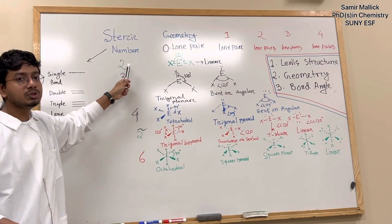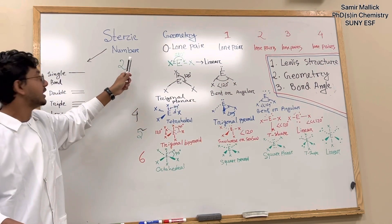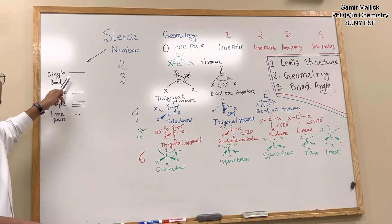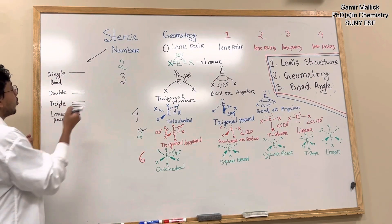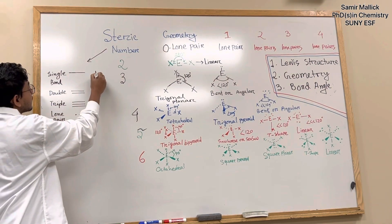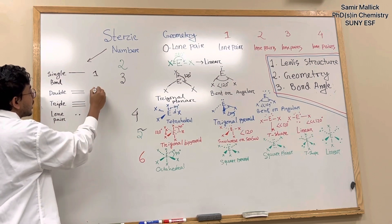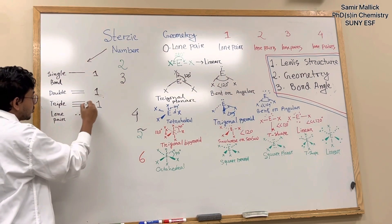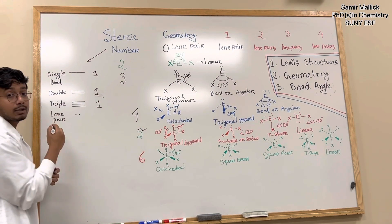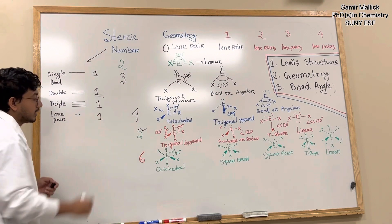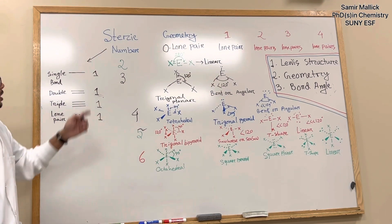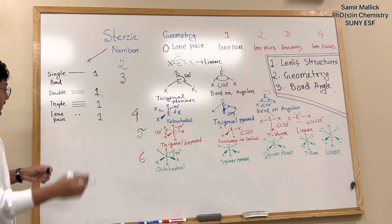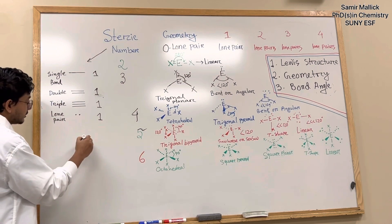So first, to determine the steric number, you need to know that a single bond counts as one and a double bond also counts as one. A triple bond also counts as one, and a lone pair also counts as one.